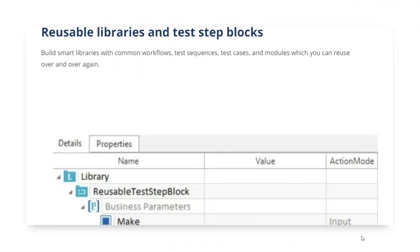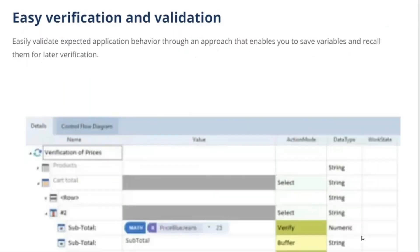There is also a concept called reusable libraries and test blocks. If you find that 10 to 15 test steps are repeating across test cases, you can create them as reusable test blocks, then create business parameters and start using these reusable test blocks or libraries in your test cases, creating tests within no time.